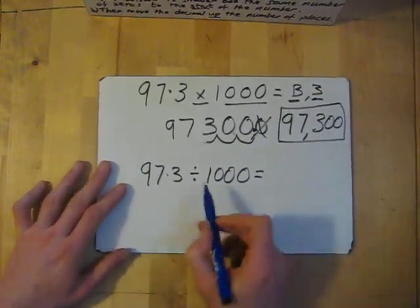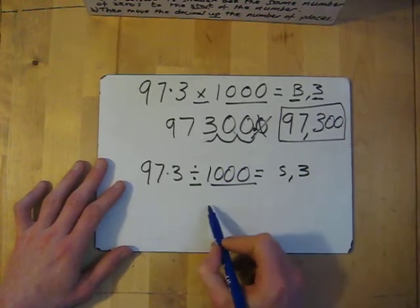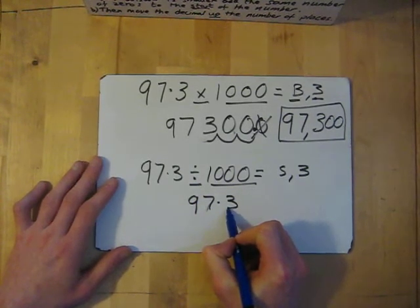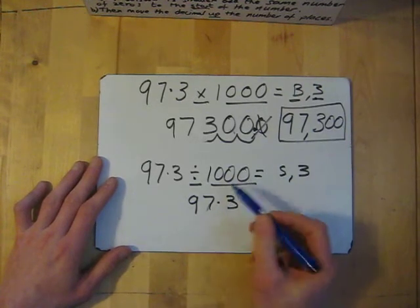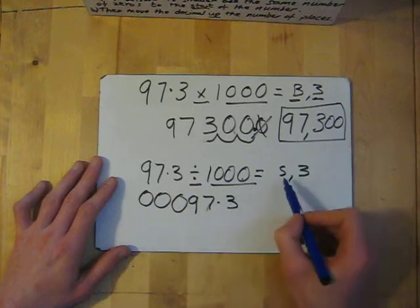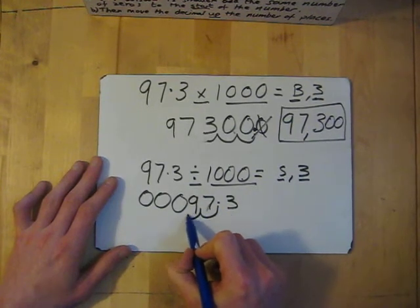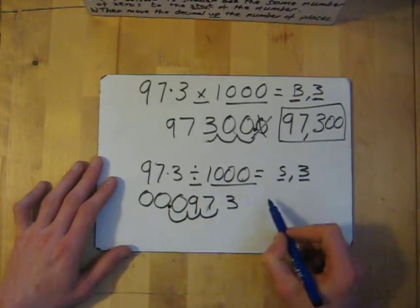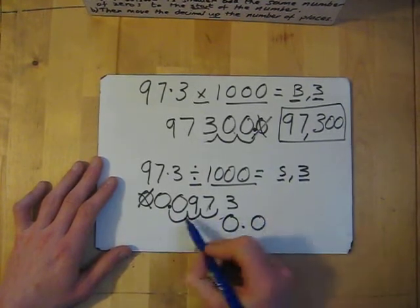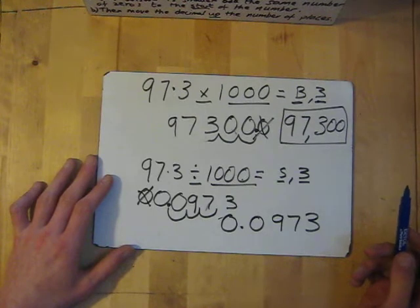And now the division: 9.73 divided by 1,000. Bigger or smaller: it's going to get smaller. How many places: three. Write the number 9.73, and add three zeros to the start of the number. If it's getting smaller, the decimal point moves up three places: one, two, three. My decimal point ends up here, so my answer is 0.00973. And that's how you multiply and divide by 10, 100, and 1,000.